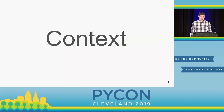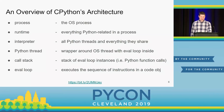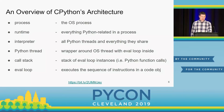Brace yourselves — there's a firehose coming. We're going to zip through a lot of these upcoming slides, but by the end we should have a pretty good understanding. These are effectively the layers of CPython. There's just one runtime in the process, one or more interpreters in the runtime, one or more Python threads per interpreter, one call stack per Python thread, and one eval loop per frame in the call stack.